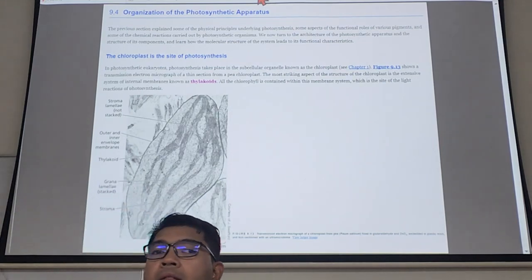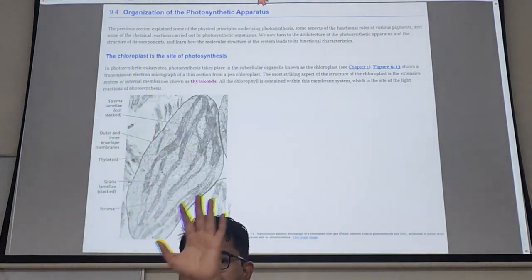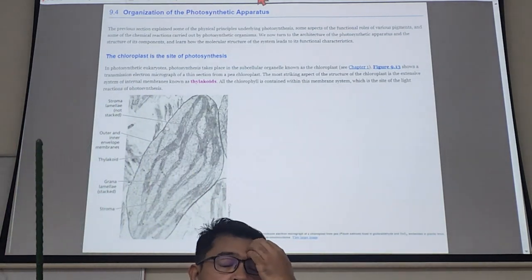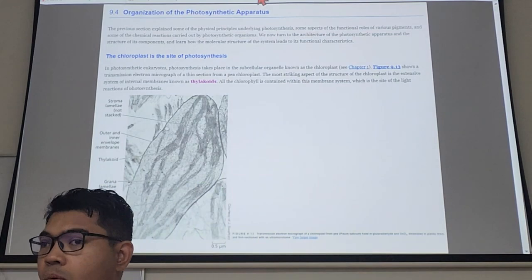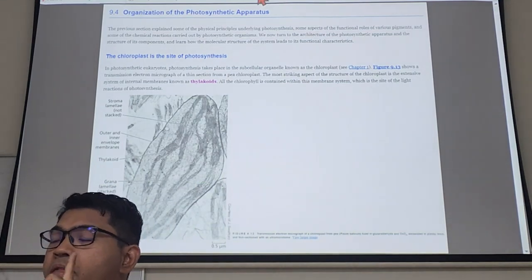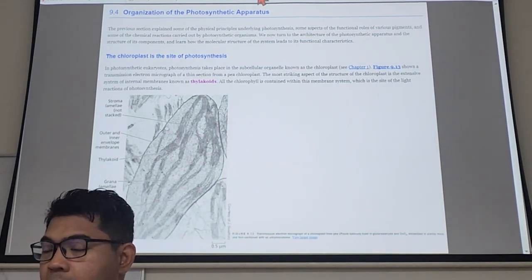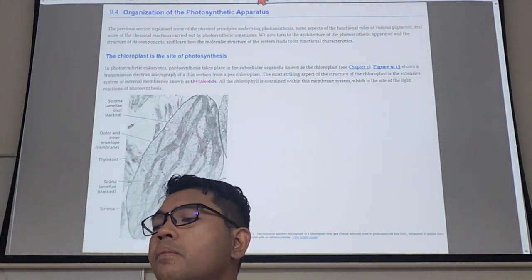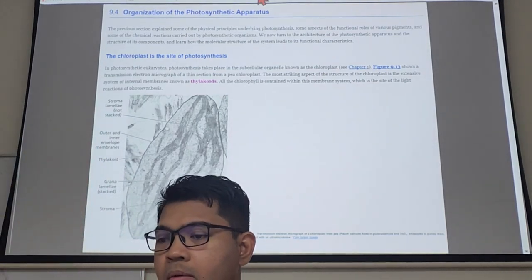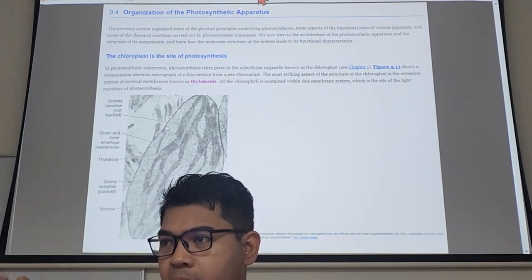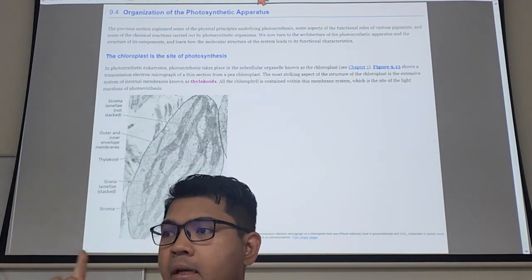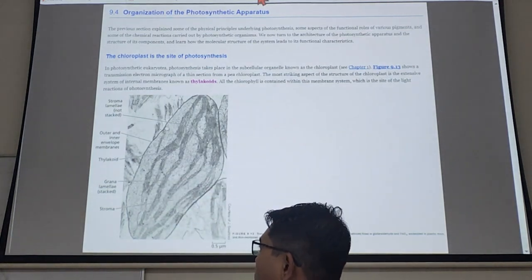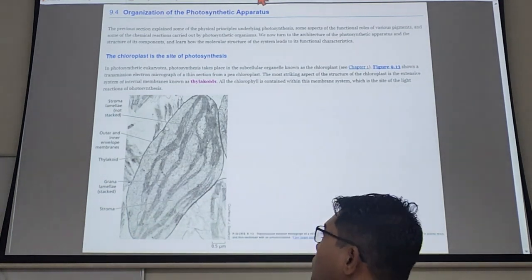There are many: nucleus, vacuoles, mitochondria and so on. We are interested with a type of plastid. There is a group of organelles collectively called plastids. One type of plastid that we are interested in today is the chloroplast, which is this guy.